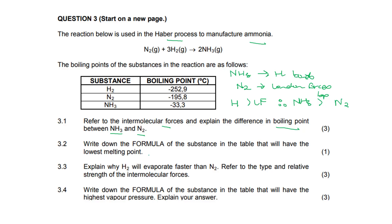3.2, write the formula of the substance that will have the lowest melting point. The lowest melting point will also have the lowest boiling point. Looking at this table, which has the lowest boiling point? Hydrogen. So the lowest melting point will then also be hydrogen.